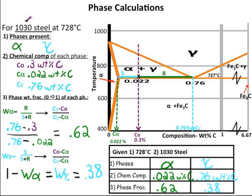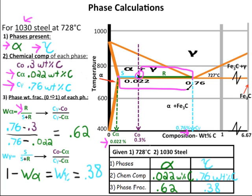Our next example has the same 1030 steel at 728 degrees Celsius, so we've cooled down from 850 to 728 degrees Celsius, putting us at this X here and still in the alpha plus gamma region. The overall composition is 0.3 weight percent carbon. To find the composition of alpha, we go from our X over to the solubility limit of carbon in alpha, read it down off the x-axis: 0.022 weight percent carbon. To find the chemical composition of gamma, we go from our X to the right where it hits the boundary line, go straight down, and read off the value: 0.76 weight percent carbon. Plugging in our values, the phase weight fraction of alpha is 0.62, and the phase weight fraction of gamma is therefore 0.38 because 1 minus 0.62 is 0.38.